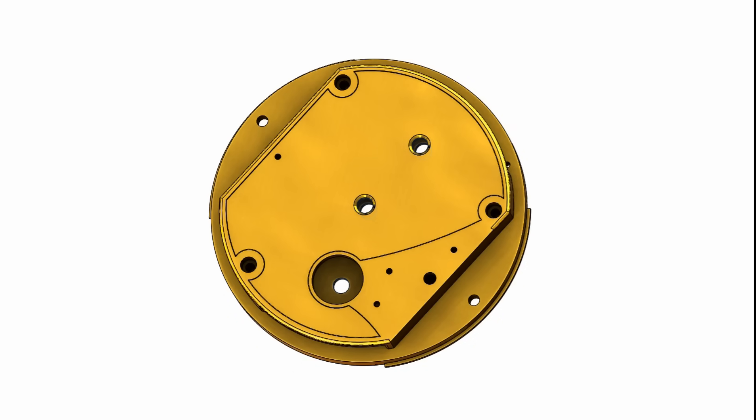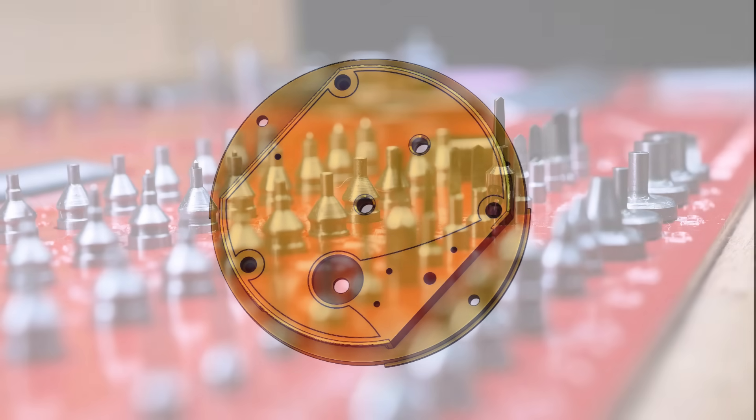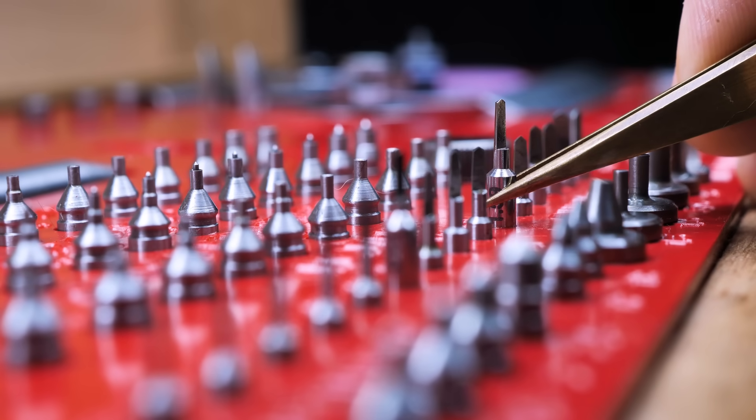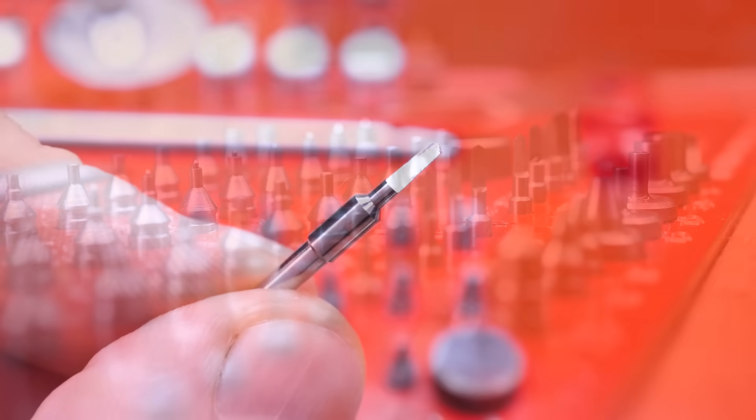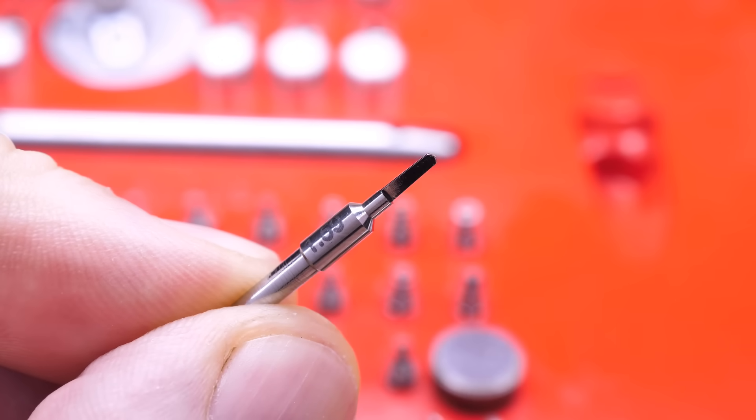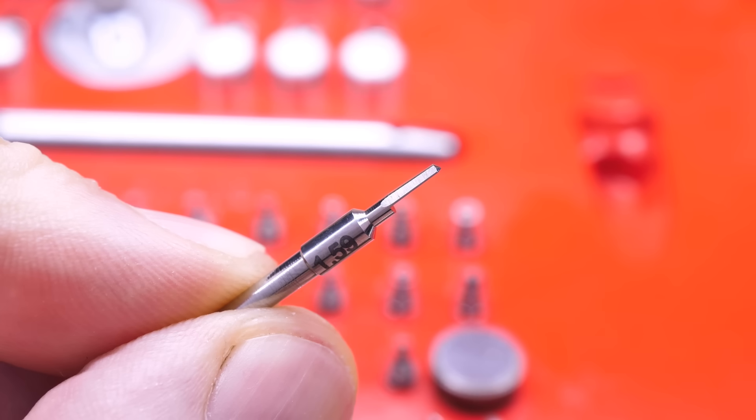The holes into which the bearing jewels are pressed are required to be one hundredth of a millimeter smaller than the jewel. So there's a need to make a cutter like those from the commercial sets, but of course suitably sized for the jewels to be used in the dial indicator project.